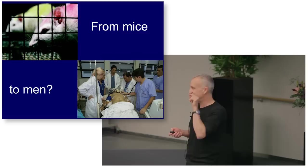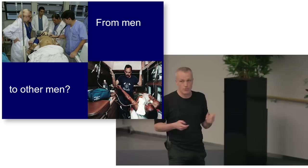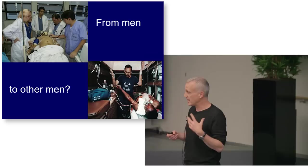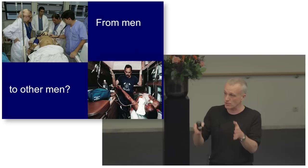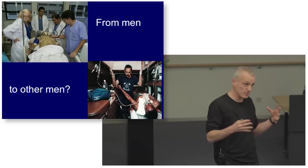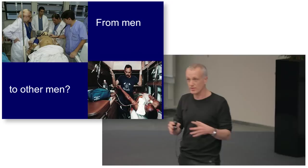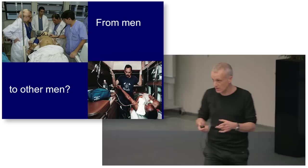Can we generalise from animal experiments to humans is a difficult question, so I'm going to concentrate on an easier question: can we generalise from human experiments to humans? I've recently encountered people who don't believe we can. If we can't do that special case — generalising from data collected on humans to other humans — then generalising from data on animals to humans is clearly more problematic.